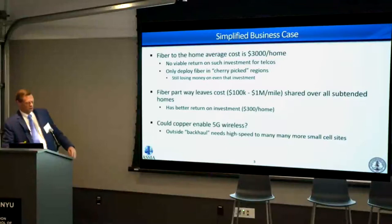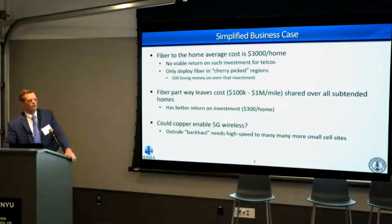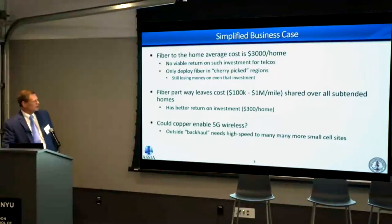We see a lot about the holdup on 5G wireless being the need for fiber to a much larger number — maybe 10 to 100 times more small cells than we have today. Could it be possible to use the existing copper-based infrastructure to address some of that more cost-effectively and thereby accelerate the deployment of 5G systems?